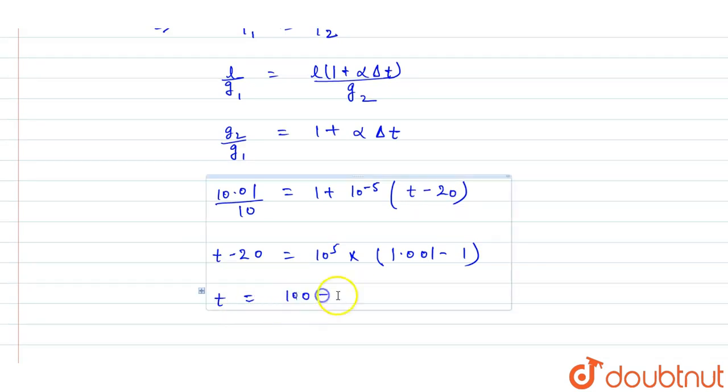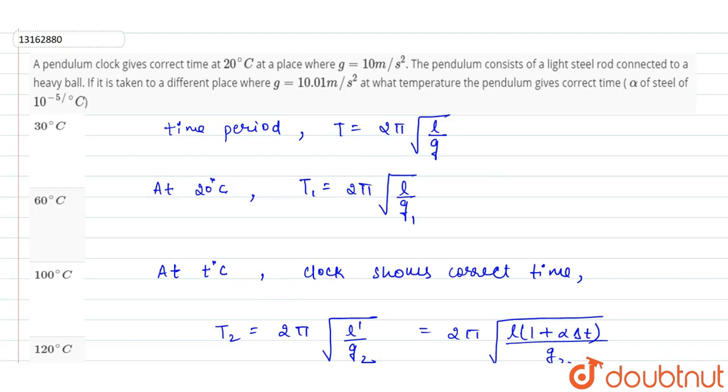This gives 100 plus 20, which equals 120 degree Celsius. This is the temperature at which the clock will give the correct time. Now if we look at options, 120 degrees is option D, so D will be the correct answer.